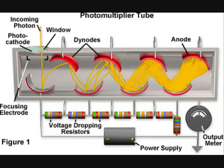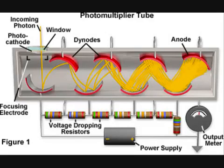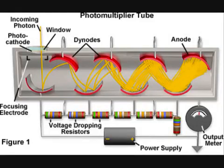Each dynode is coated with a bialkali metal that initiates the photoelectric effect. This process is able to turn a single electron, through a series of interactions with the dynodes, into a million subsequent electrons. Once the electrons have successfully gone through all the dynodes, they are absorbed by the anode and sent to a readout device, creating an electric current.